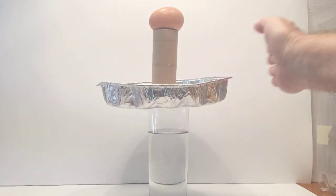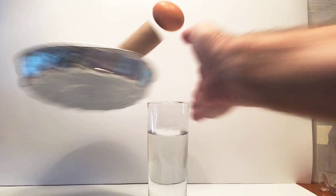Why does the egg fall into the glass? Well, this is answered by Sir Isaac Newton's first law of motion, which states an object at rest remains at rest, and an object in motion stays in motion with the same velocity unless acted upon by an unbalanced force.